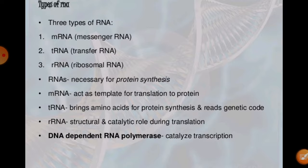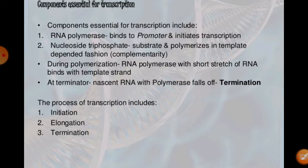Moving to the different types of RNA: RNA are basically three types — messenger RNA (mRNA), transfer RNA (tRNA), and ribosomal RNA (rRNA). RNAs are necessary for protein synthesis. Messenger RNA acts as a template for translation to form protein. Transfer RNA brings amino acids for protein synthesis and reads genetic codes. Ribosomal RNA plays a structural and catalytic role during translation. DNA-dependent RNA polymerase catalyzes the transcription process.